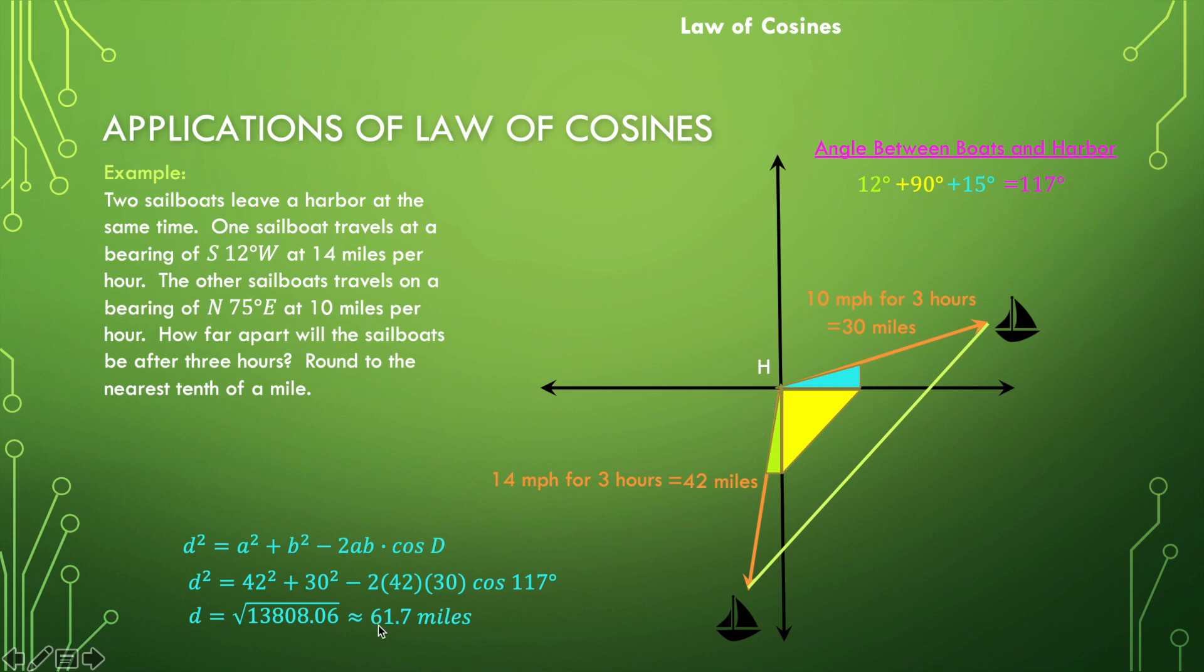Because if we're going 30 miles in this direction and 42 in this direction, if this were a straight line, it'd be 72 miles, but it's not quite straight. So it's pretty close to that 72. That's a very logical answer. Let's look at the next application.